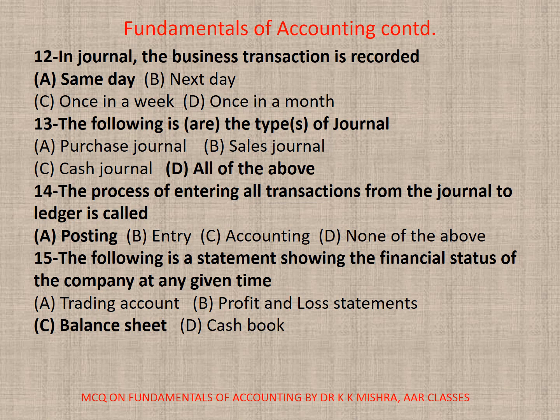Question 13: The following are the type or types of Journal — A. Purchase Journal, B. Sales Journal, C. Cash, or D. All of the above. Correct option is D. All of the above.